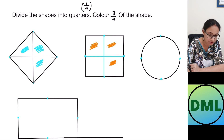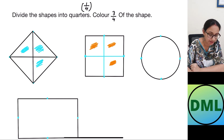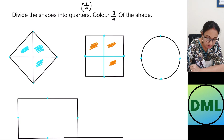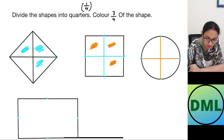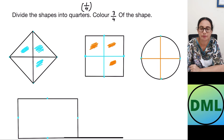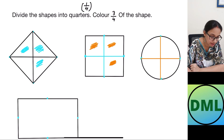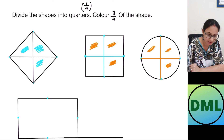Now let's look at the next shape — this is the circle. I divide it into four equal parts by joining like this and like this. Now I have to color three parts — this part, this part, and this part.